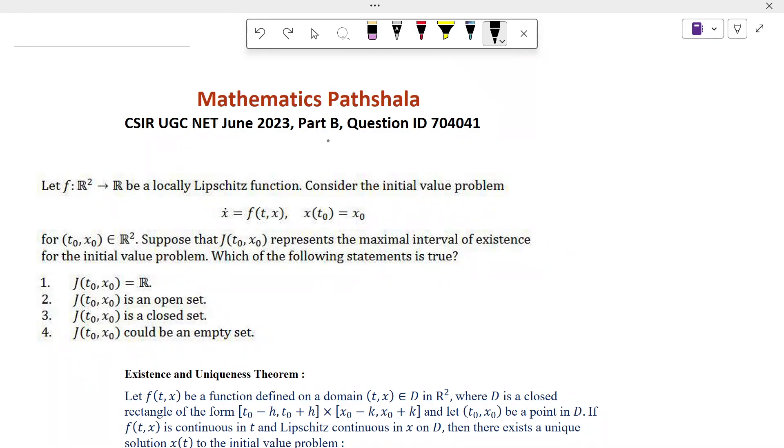Let's see the problem. Let f be a locally Lipschitz function. Consider the initial value problem x dot equal to f(t,x), x(t0) equal to x0 for (t0, x0) belongs to R². Suppose that J(t0, x0) represents the maximal interval of existence for the initial value problem. Which of the following statement is true?